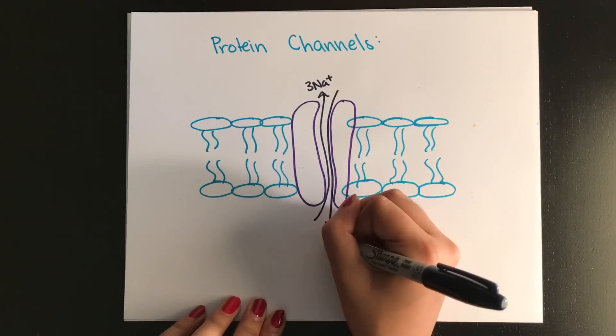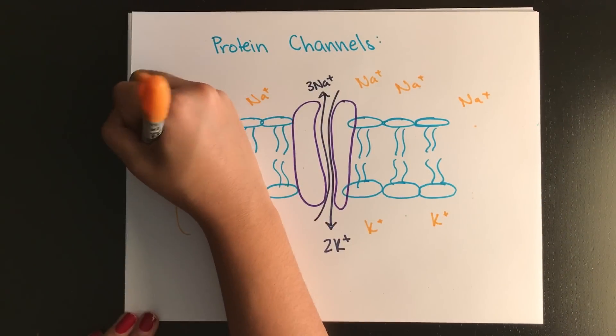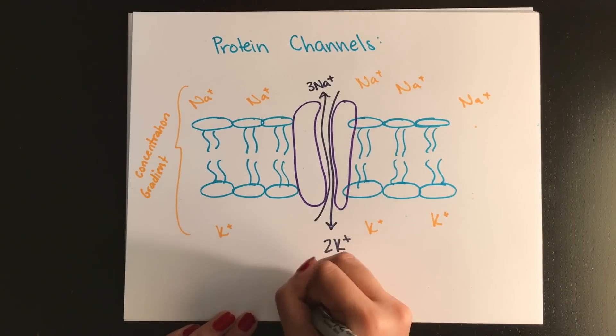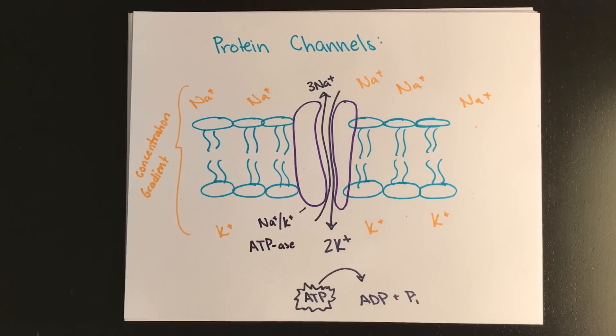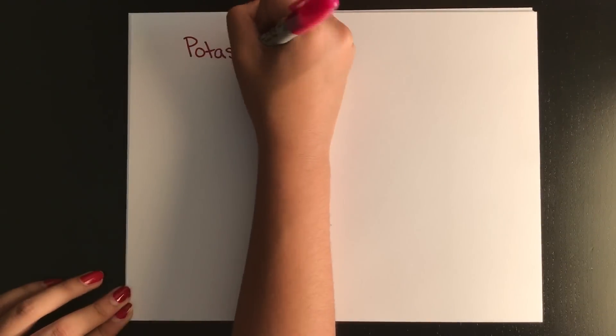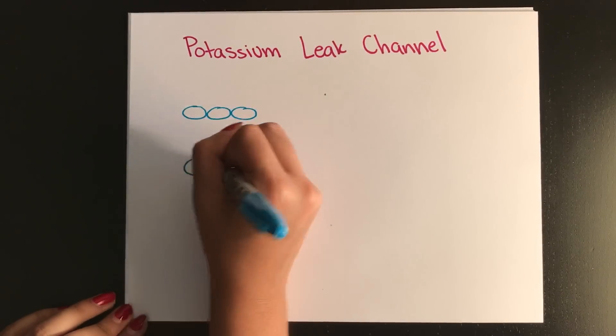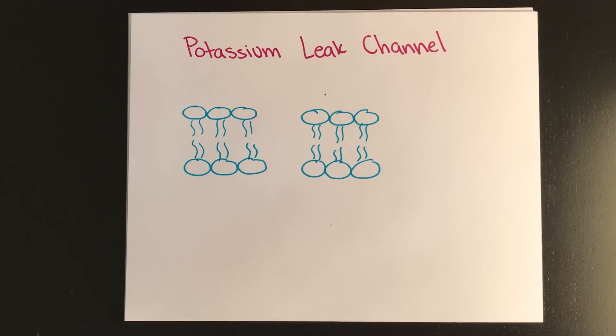Now the first membrane protein we're going to look at is called a sodium-potassium pump or a sodium-potassium ATPase, which requires one molecule of ATP to move three sodium ions out of the cell and two potassium ions in. The second protein we're going to look at is called a leak channel, a potassium leak channel, because it's always open and this will allow the potassium to leak out of the cell passively based on diffusion.